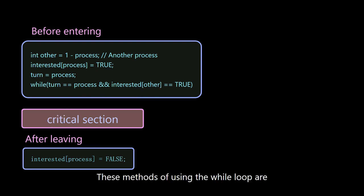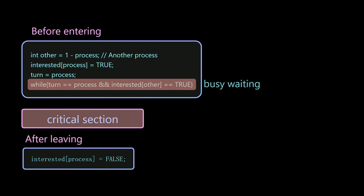These methods of using the while loop are called busy waiting. It will cause the CPU to spin idly. Therefore, a better way is to use system calls. At this time, the process will be suspended, and the CPU will be released.